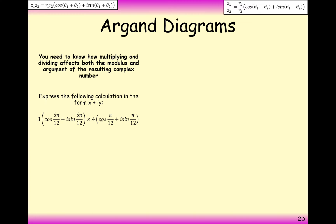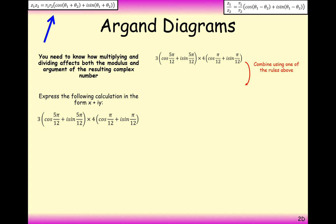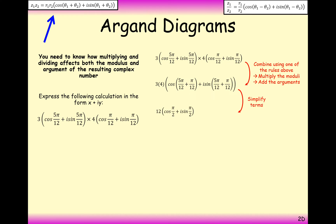Let's multiply these two numbers together. We have 3(cos 5π/12 + i sin 5π/12) times 4(cos π/12 + i sin π/12). Multiplying the moduli: 3 × 4 = 12. Adding the arguments: 5π/12 + π/12 = 6π/12 = π/2. So the result is 12(cos π/2 + i sin π/2).